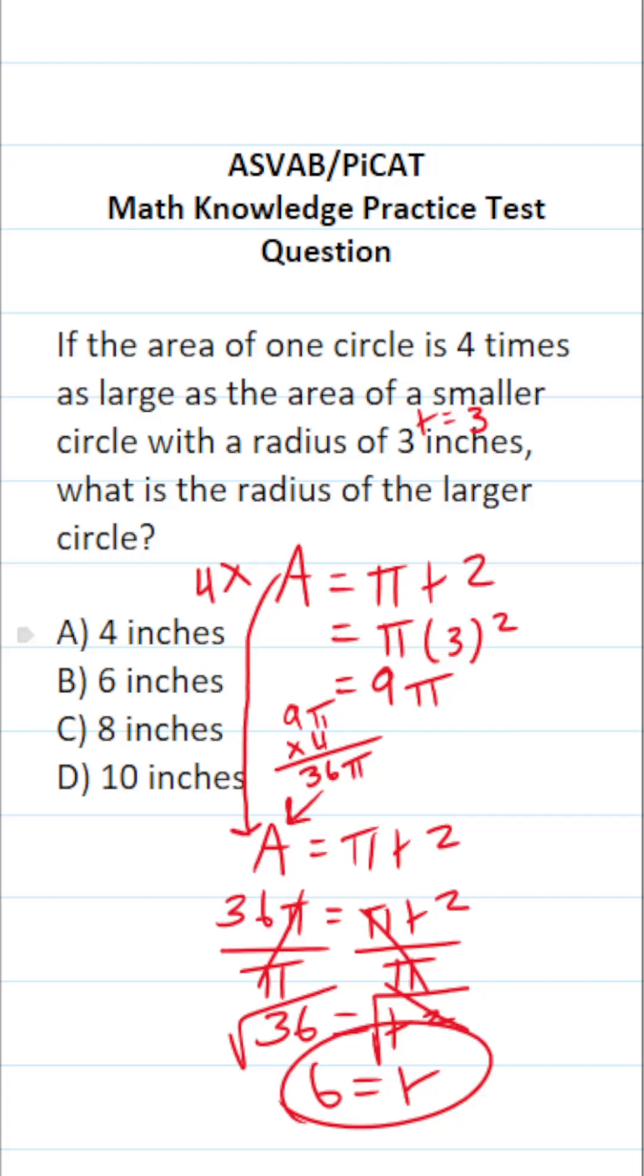So in other words, the radius of the larger circle is B, 6 inches.